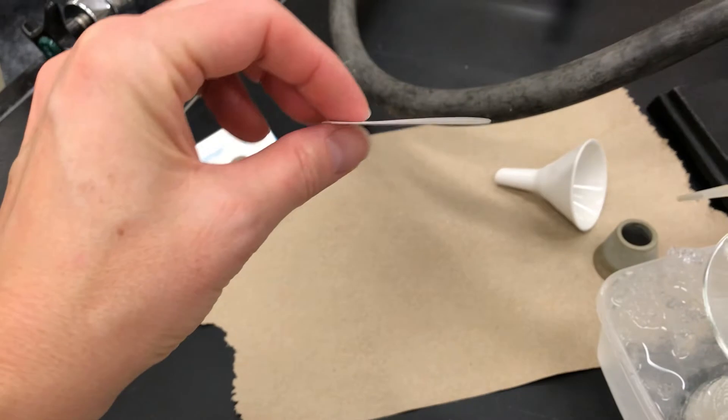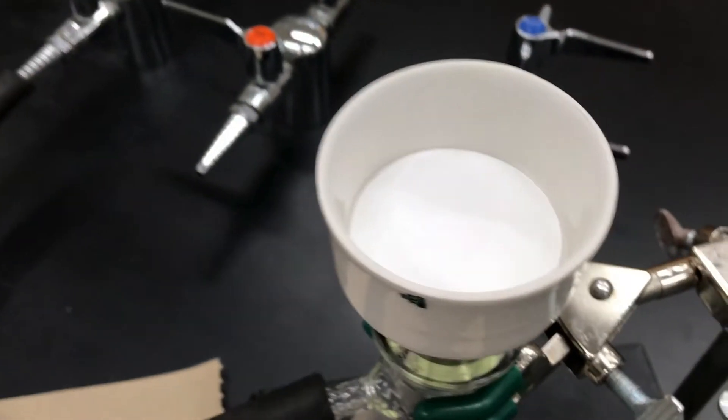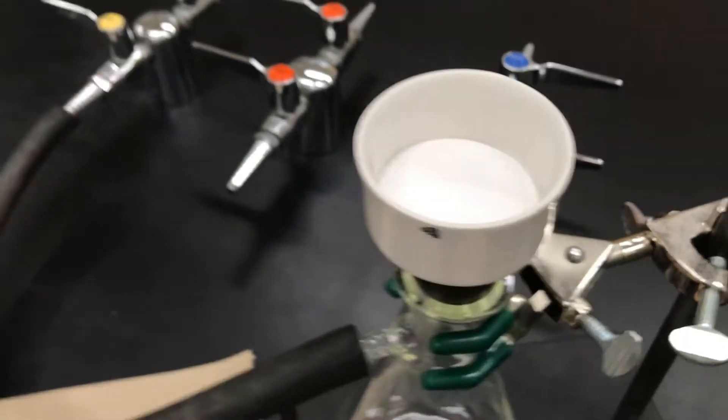There are holes in it. So I next need to put a filter paper into the flask. And now I'm ready to start filtering.